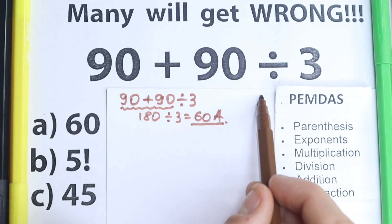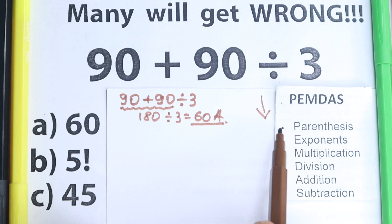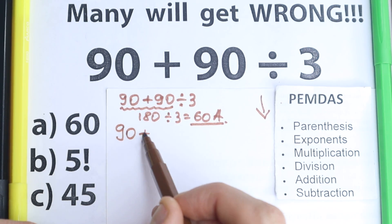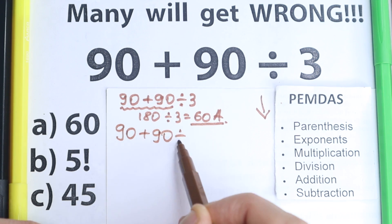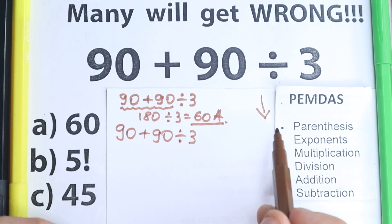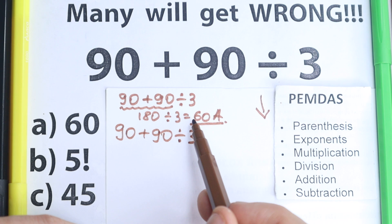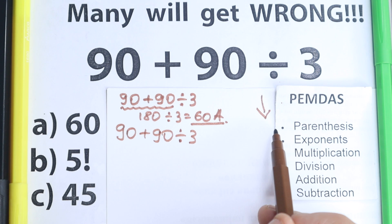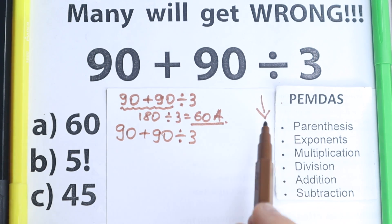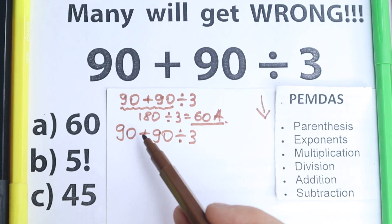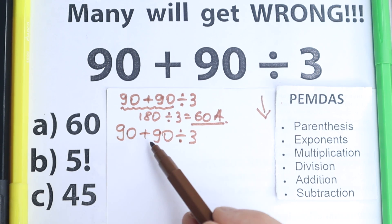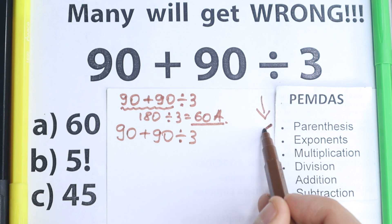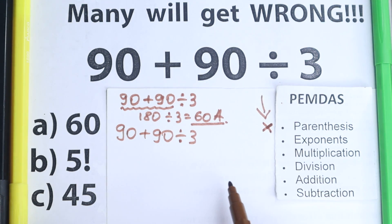PMDMC works from the top to the bottom, so we go step by step. We have 90 plus 90 divided by 3. First of all, we have parentheses — we need to scan: where do we have parentheses? Looking at our question, I don't see any parentheses at all. So we just skip this part — we don't have any parentheses, which is really great.